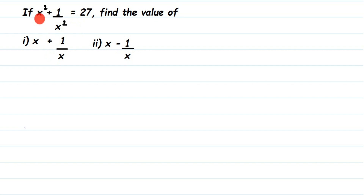In the question we have x² + 1/x², which has squares, but the values we have to find have no power — x + 1/x and x - 1/x (just a sign change). So how do we find them? We'll take the first one.